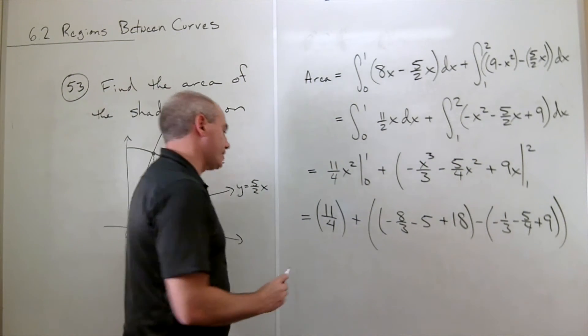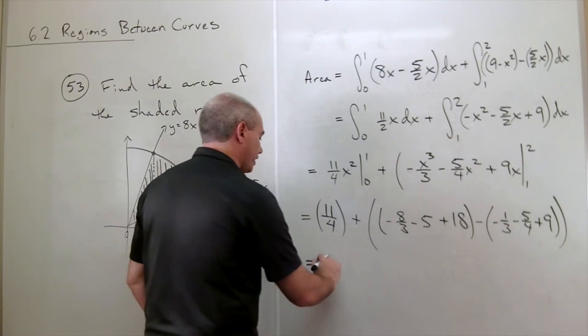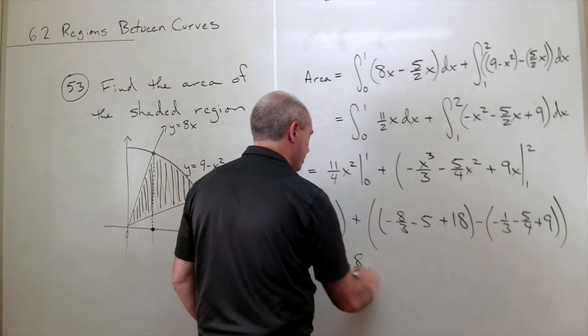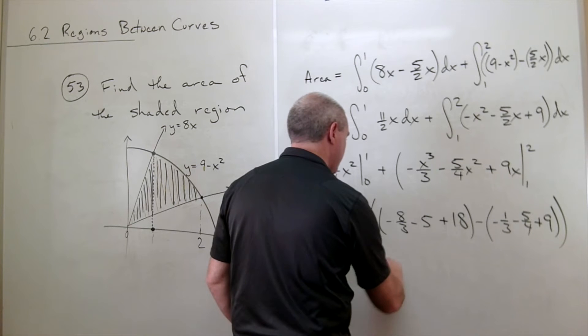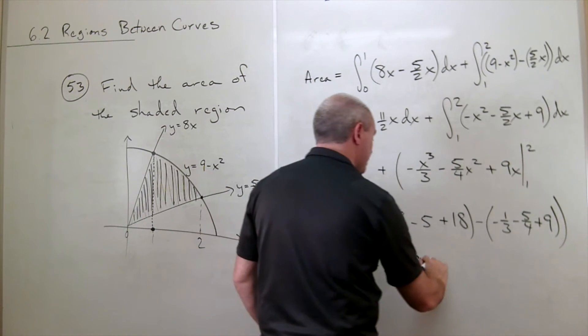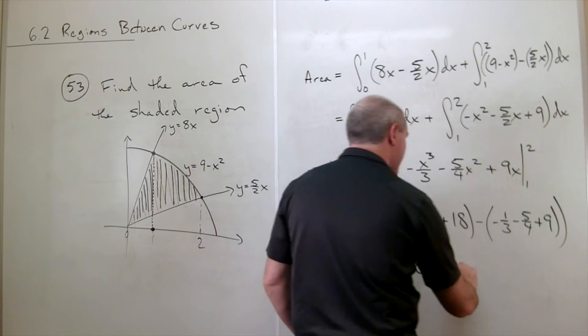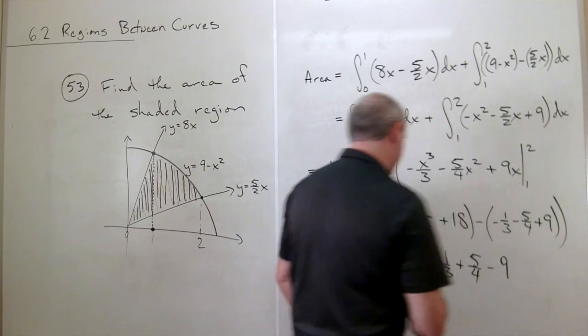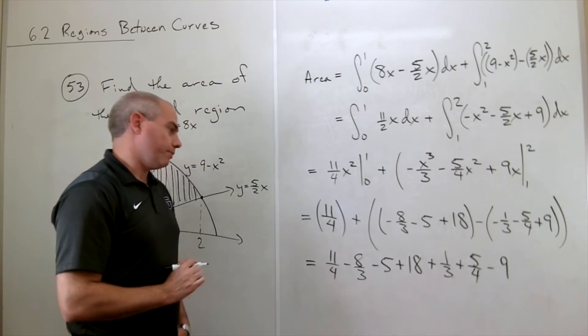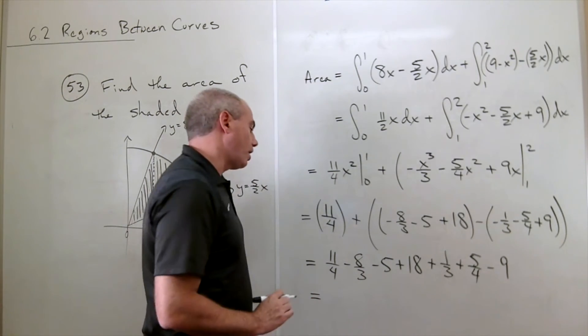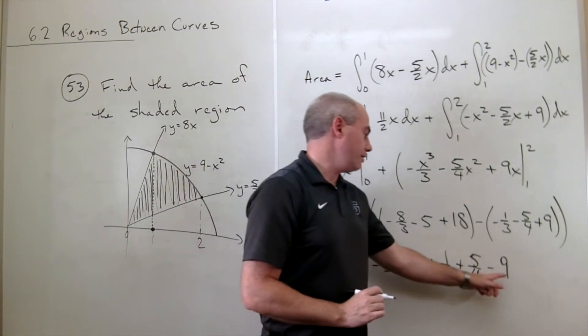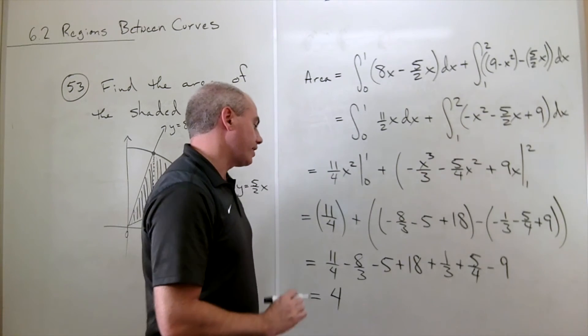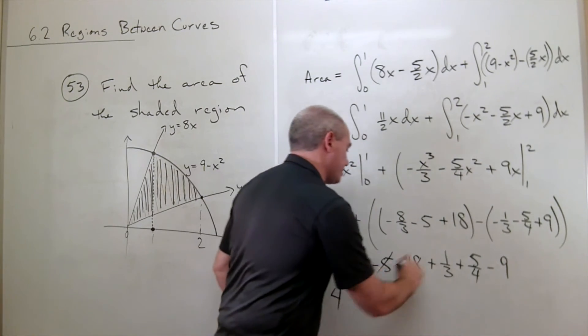Now we need to combine all these together. We've got 11 over 4, minus 8 thirds, minus 5, plus 18, plus 1 third, plus 5 fourths, and finally minus 9. Let's put this all together. How many constants do I have? I have 18 minus 9 minus 5, so that is 4.